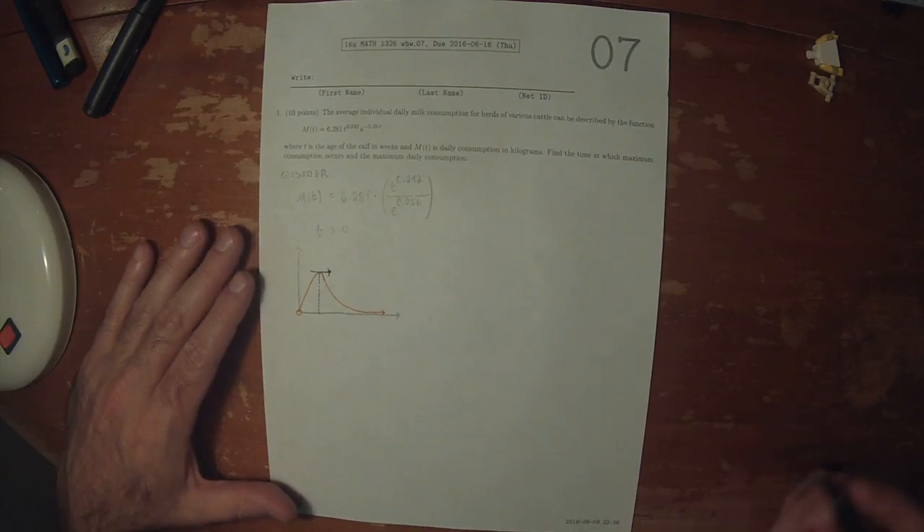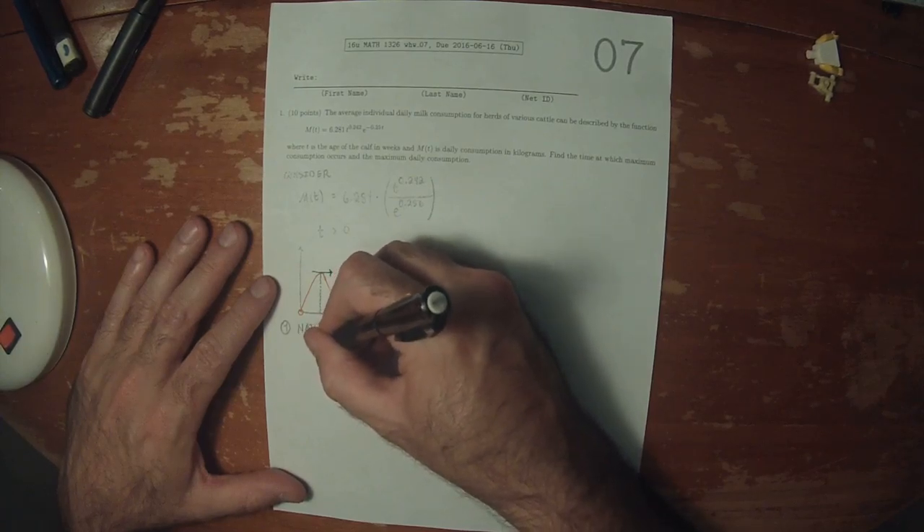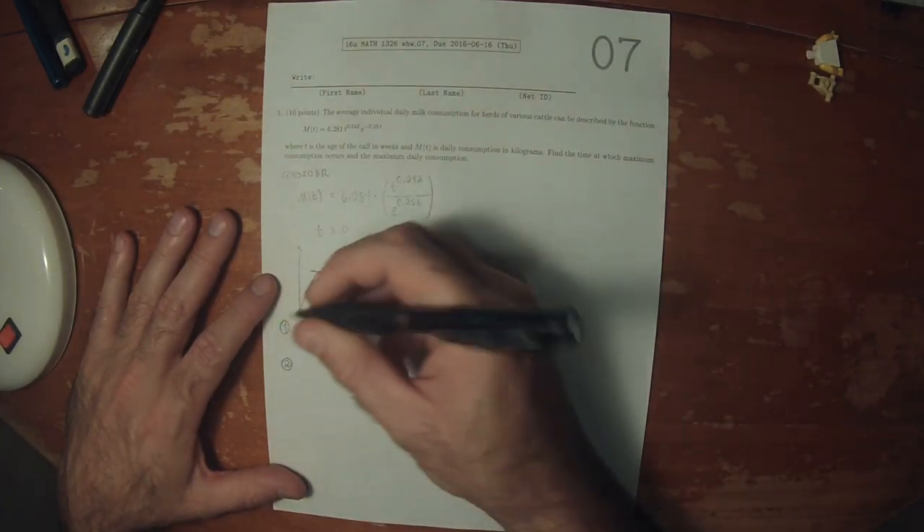So let's see if that occurs and let's construct a slope chart. The first step in constructing a slope chart is to consider the natural domain. So that's t is greater than 0. We need to find the stationary points.